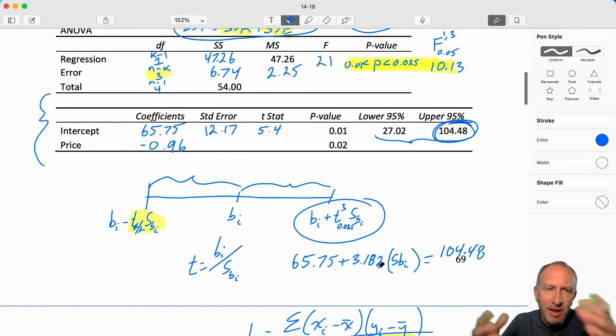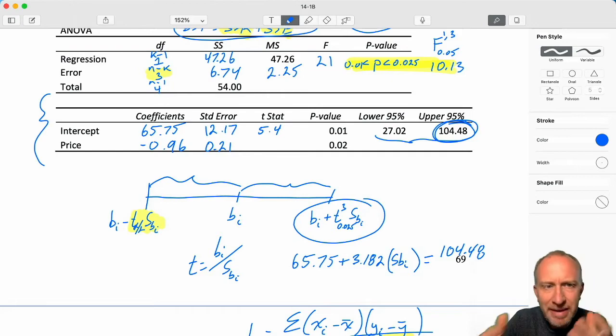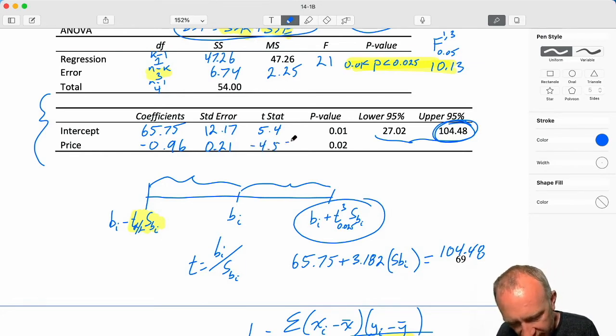50.8 is what I need in my square root. So this is 1.5 divided by the square root of 50.8, and that gives me 0.21. So a little bit of calculations, a little bit of time, but we've managed to take some shortcuts here, given the information that we had to work with. Our test statistic, 0.96 negative divided by 0.21, negative 4.57.